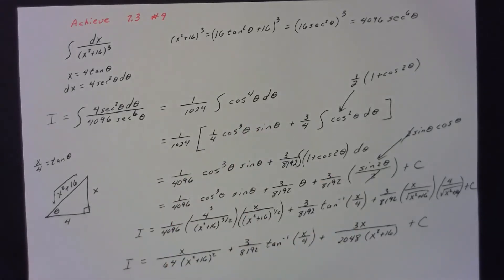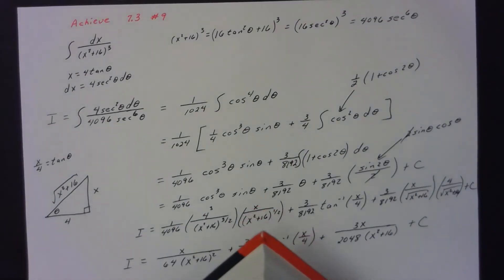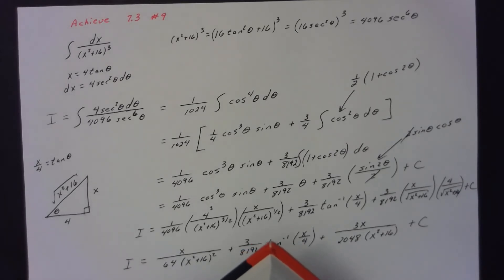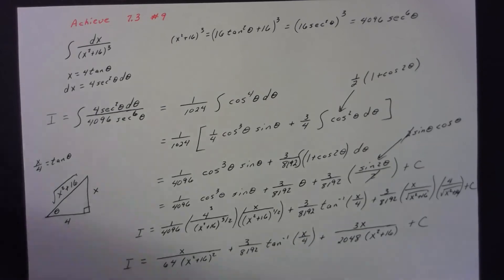I'm using a reduction formula for the cosine function — this is the cosine to the fourth power. The online Achieve system really likes you to use the table formulas here. You would have sec⁴ in the denominator, and dividing by sec⁴ is the same as multiplying by cos⁴.